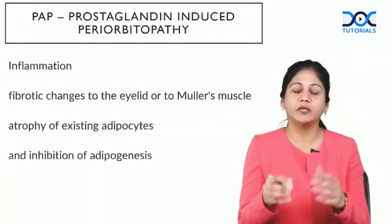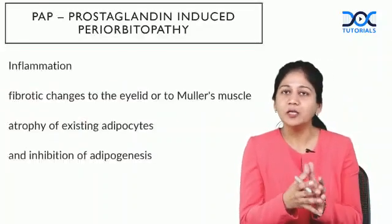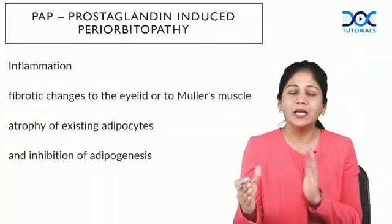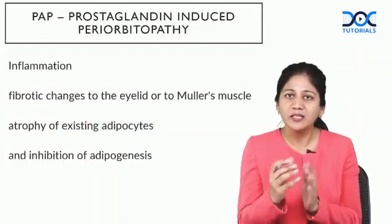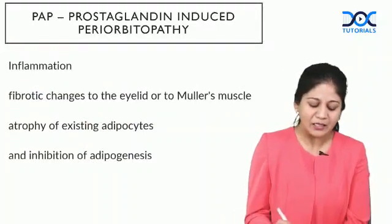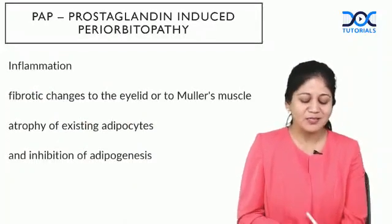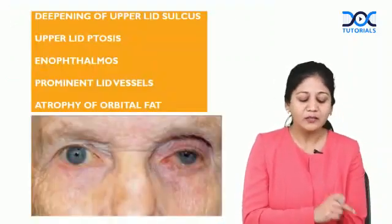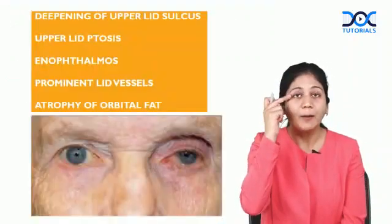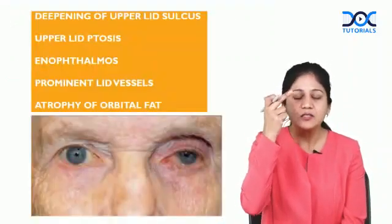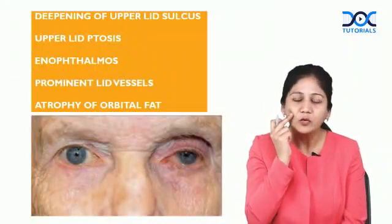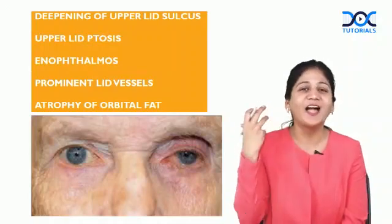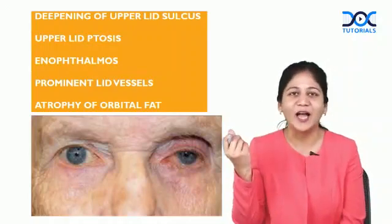What exactly do they do? Because of their inherent pro-inflammatory property, prolonged use of PG analogs can later cause fibrosis. This induces a decrease in adipogenesis and atrophy of the existing adipocytes. What you get is deepening of the upper lid sulcus, periorbital fat atrophy, upper lid ptosis, and enophthalmos.